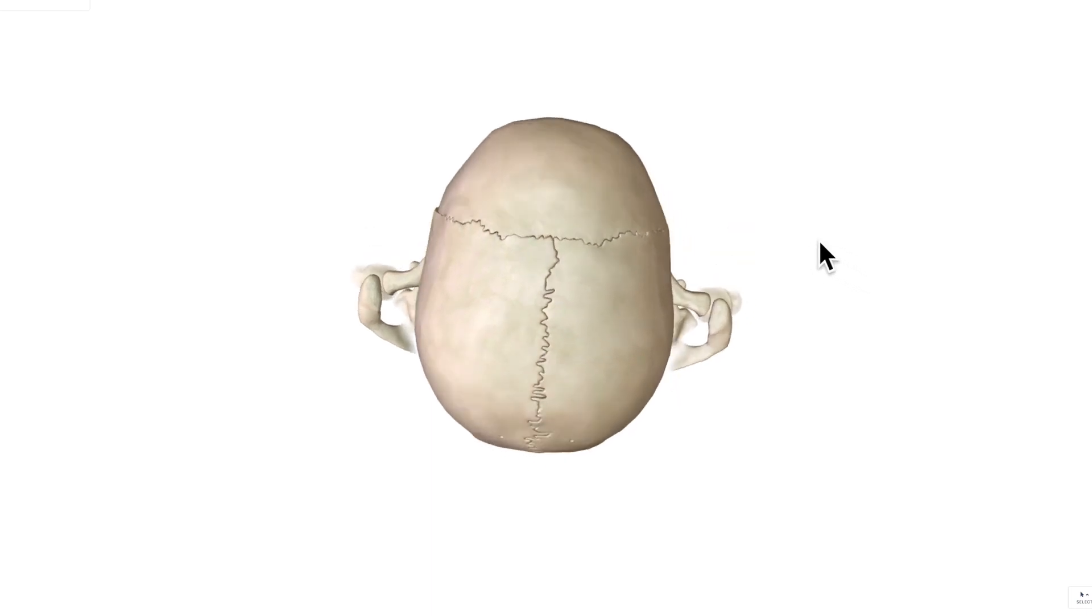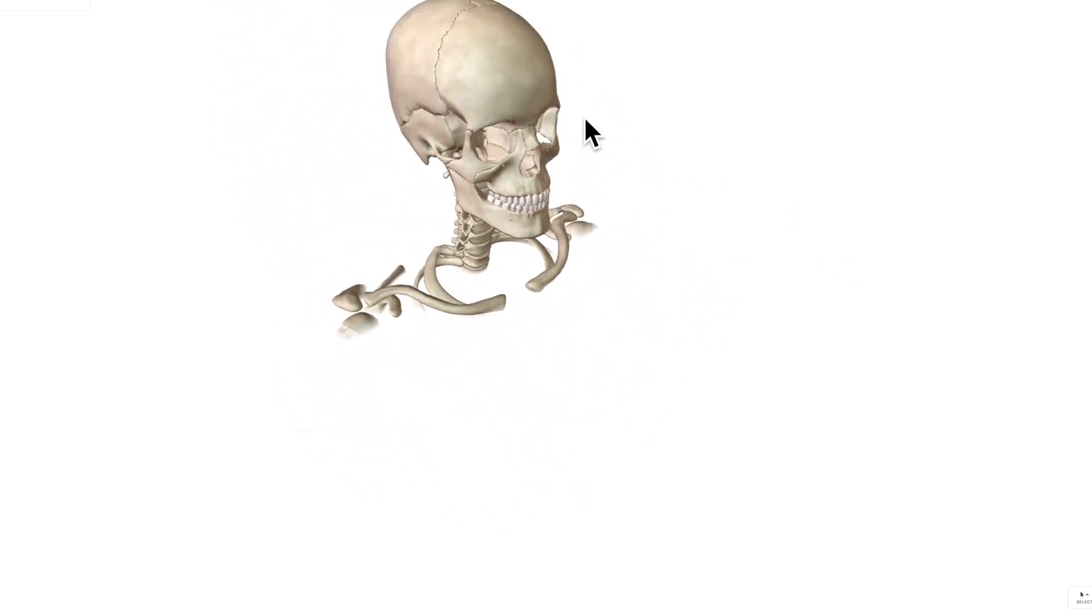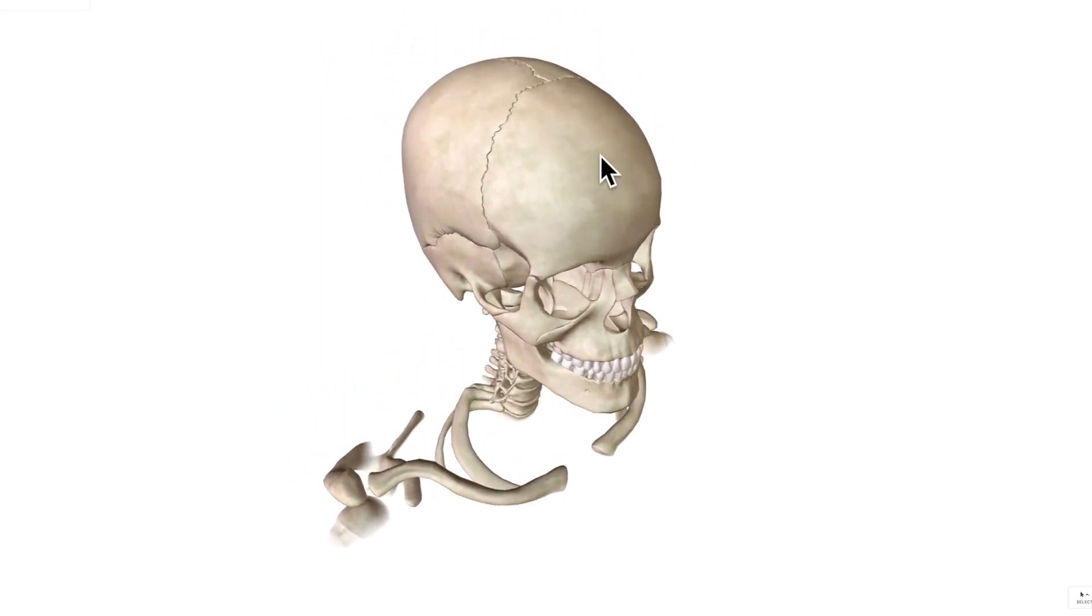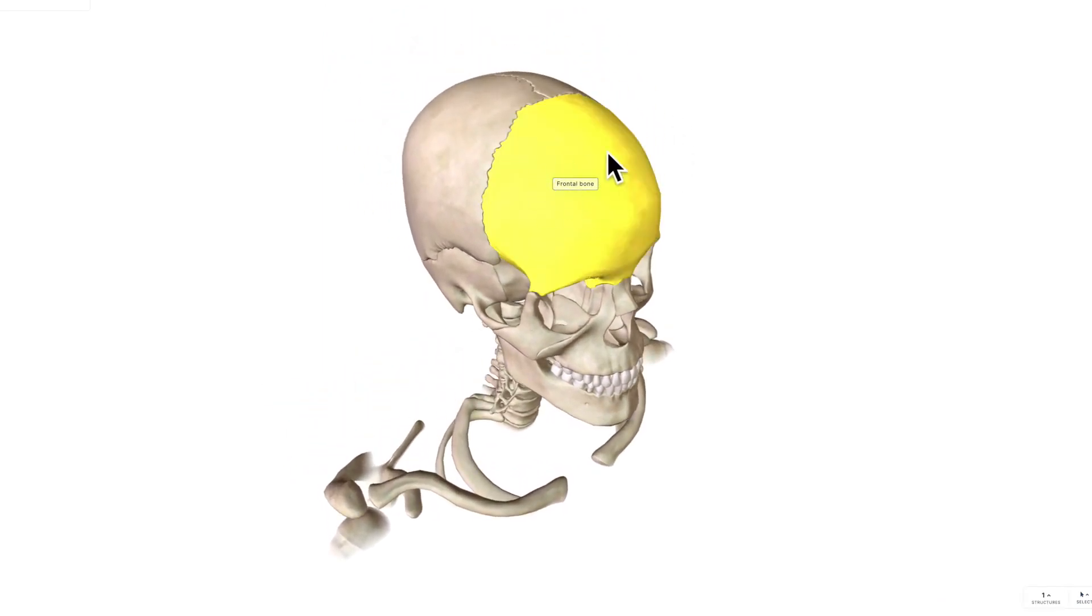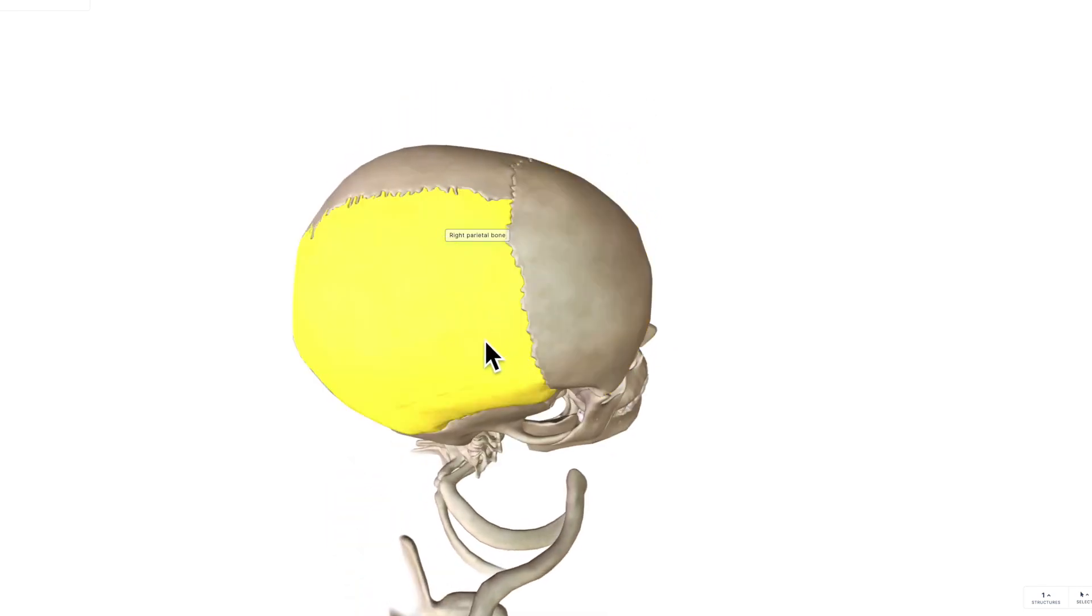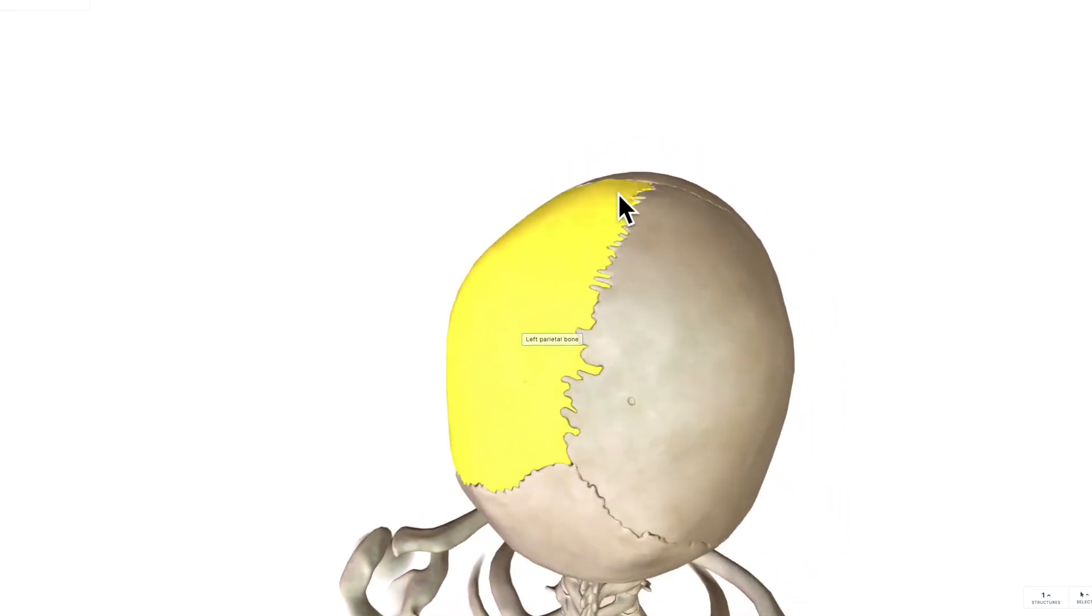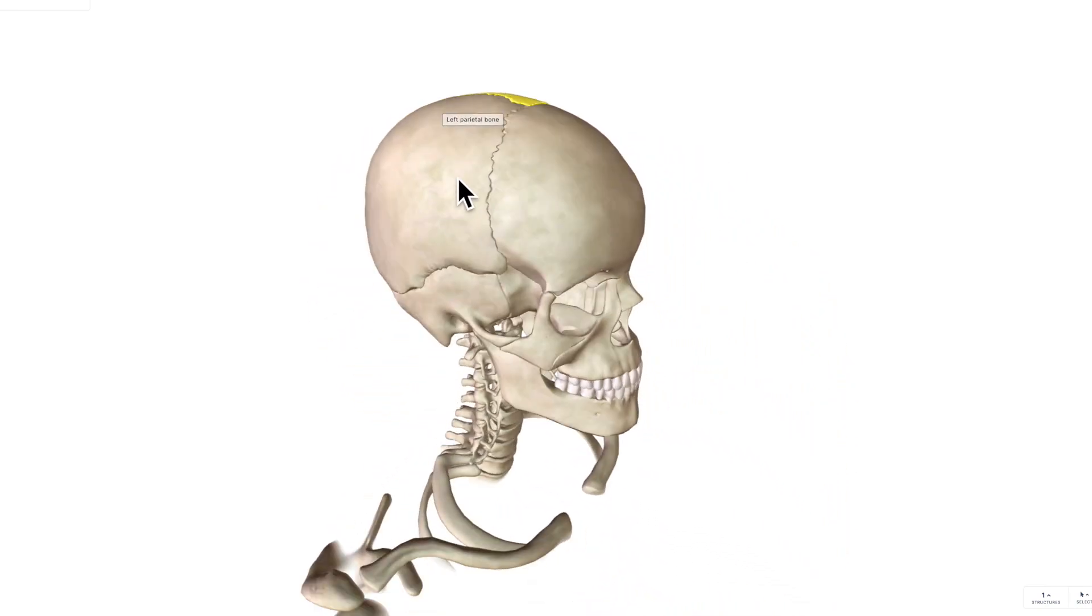If we move it slightly this way anteriorly, you can see that the coronal suture is going to be joining your frontal bone, so one frontal bone with the two parietal bones. You've got the right parietal bone and the left parietal bone with the frontal bone.